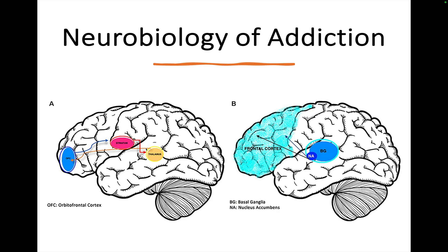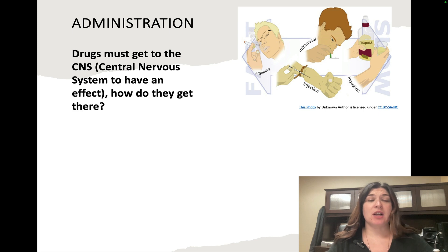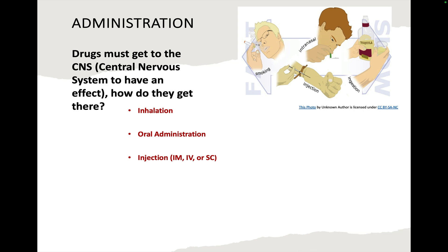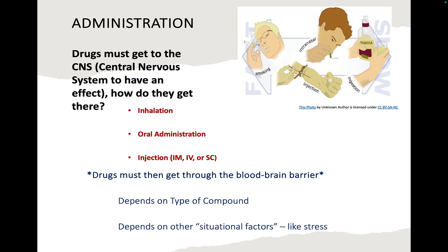These next slides focus on the neurobiology of addiction, because substance use disorders are now considered a chronic brain disease. Let's look at what that means and where it's located in the brain. First, it's important to talk about drug administration — drugs have to be able to access the central nervous system. The different methods include inhalation, oral administration, injection, and some drugs that can be absorbed through the skin. The method of administration impacts how quickly and how purely the drug can get through the blood-brain barrier, which then determines how intensely the drug affects the central nervous system. Oral administration takes longer because the drug must be metabolized before it can reach the brain.